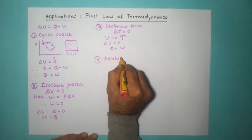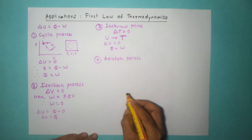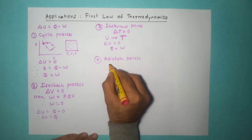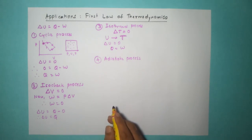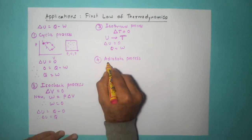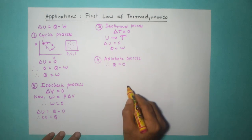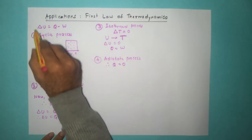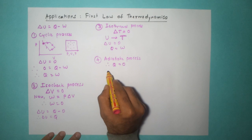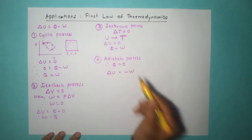The fourth process is the adiabatic process. In an adiabatic process, there is no transfer of heat — heat is neither given to the system nor lost by the system, as the system is insulated. So Q equals zero. Applying the first law, delta U equals zero minus W, giving delta U equals minus W.